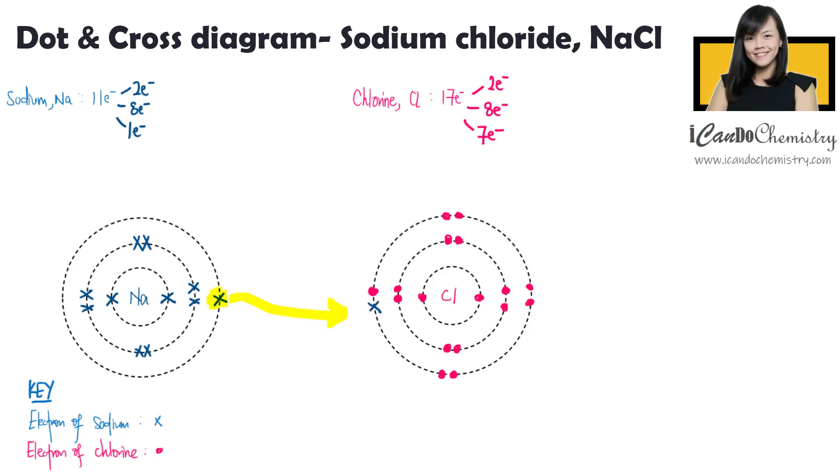Hence, it will take in 1 electron from sodium so that it can have 8 electrons in its outermost shell. Sodium atom will donate 1 electron to chlorine atom to form sodium ion and chloride ion. Now do note, metals always give away electrons and non-metals always take in electrons.